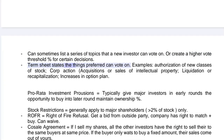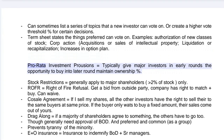The term sheet states what matters preferred shareholders can vote on — examples include authorization of new classes of stock, corporate actions, acquisitions or sales of intellectual property, liquidation or recapitalization, and increases in the option plan. Pro rata investment rights typically give major investors in early rounds the opportunity to buy into later rounds to maintain their ownership percentage.